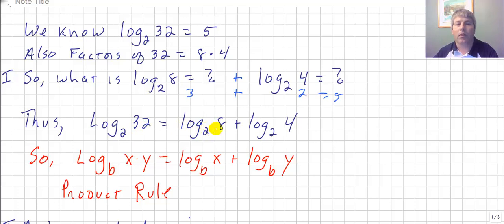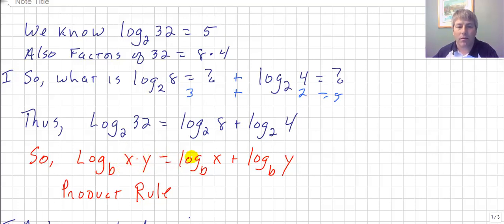That brings us to our first rule. Log base 2 of 32 equals log base 2 of 8 plus log base 2 of 4. We can take our answer, split it into the product — the sum of its two factors — and take their logarithms and add them together, just like a power times a power where we add the exponents. So our rule says: log base B of x times y equals log base B of x plus log base B of y. That is our product rule.